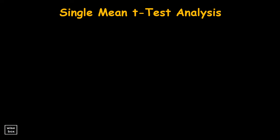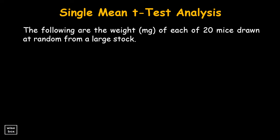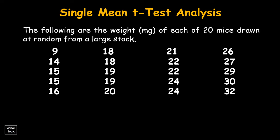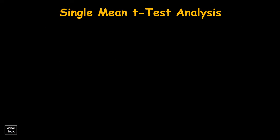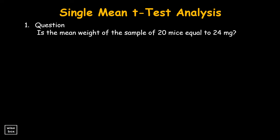The single mean t-test analysis. The following are the weights, in milligrams, of each of 20 mice drawn at random from a large stock. Is it likely that the mean weight for the whole stock could be 24 milligrams, a value observed in some previous work? First, identify the question and list the parameters needed: number of samples of 20, sample mean of 21, standard deviation of 5.91, and population mean of 24.